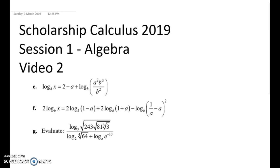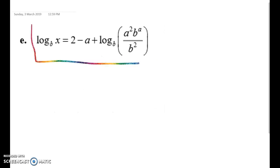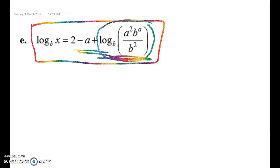So the first one is this one here where we've got log to base b of x is equal to all of this stuff. I'm going to start by simplifying this and the whole thing will unravel. Remember when I'm solving I need to end up with x equals.